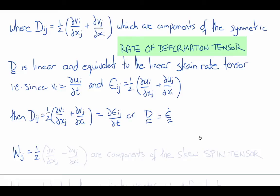The components of W are one-half del vi del xj minus del vj del xi, which is skew symmetric, and these are called the components of the spin tensor.